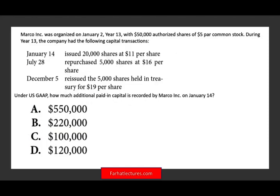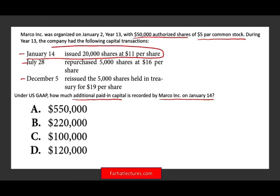Let's take a look at the next question. Marco was organized on January 2nd with 50,000 shares authorized, $5 par common stock. During the year 2013, the company had the following capital transactions on January 14th, July 28th, and December 5th. Under U.S. GAAP, how much additional paid-in capital is recorded by Marco on January 14th? On January 14th, the company issued 20,000 shares for $11. The best way to do this is to go through the journal entry.